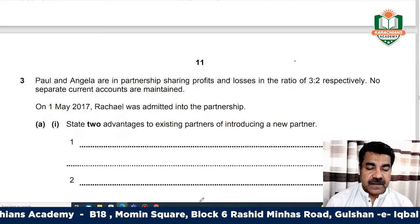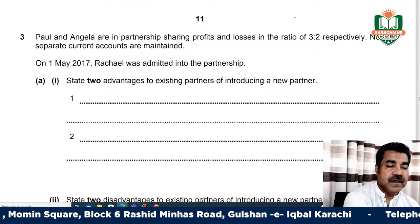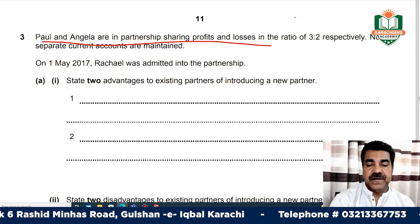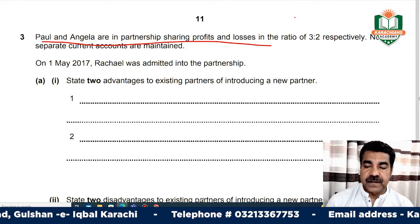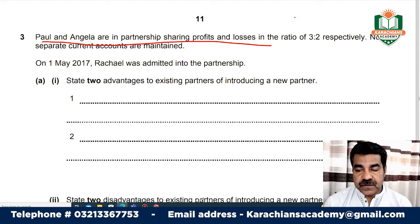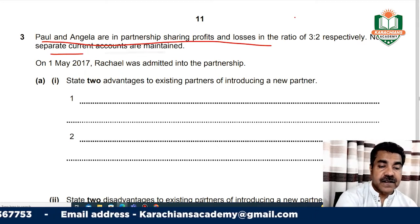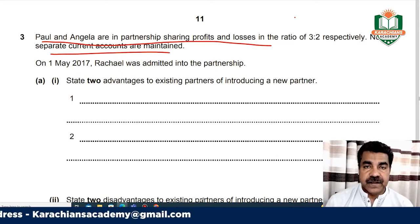Now we will start question number 3. Paul and Angela are in partnership, sharing profits and losses in the ratio 3 to 2. Separate current accounts are maintained.